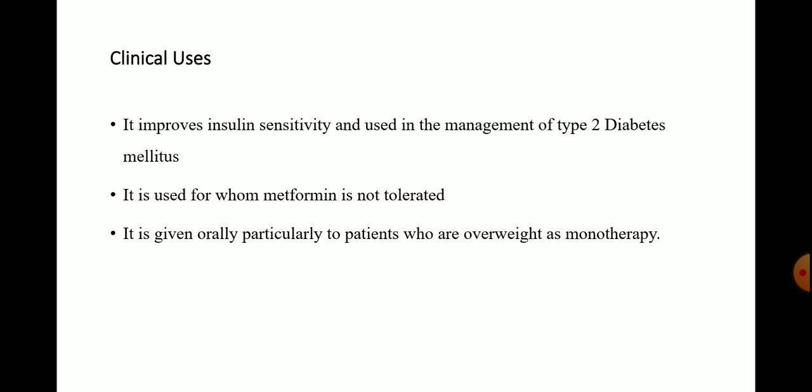The clinical uses of rosiglitazone: it improves insulin sensitivity and is used in the management of type 2 diabetes mellitus. It is used for patients for whom metformin is not tolerated. It is given orally, particularly to patients who are overweight, as monotherapy. This is all about thiazolidinediones used as anti-diabetic drugs. Thank you.